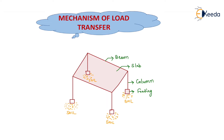In this building or structure I have made, the structure mainly consists of certain components and these components work together to make the structure. You are seeing in this frame a single story building. The horizontal members are considered as beams, the vertical member is considered as a column, and this is the slab.